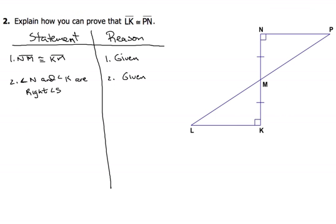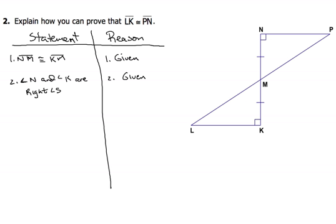In example number two, we need to explain how we can prove that segments LK and PN are congruent. First, NM and KM are congruent — that's given, shown by the hash marks. Second, angles N and K are right angles — also given. Since all right angles are 90 degrees, all right angles are congruent, so we write angle N is congruent to angle K with the reason that all right angles are congruent.